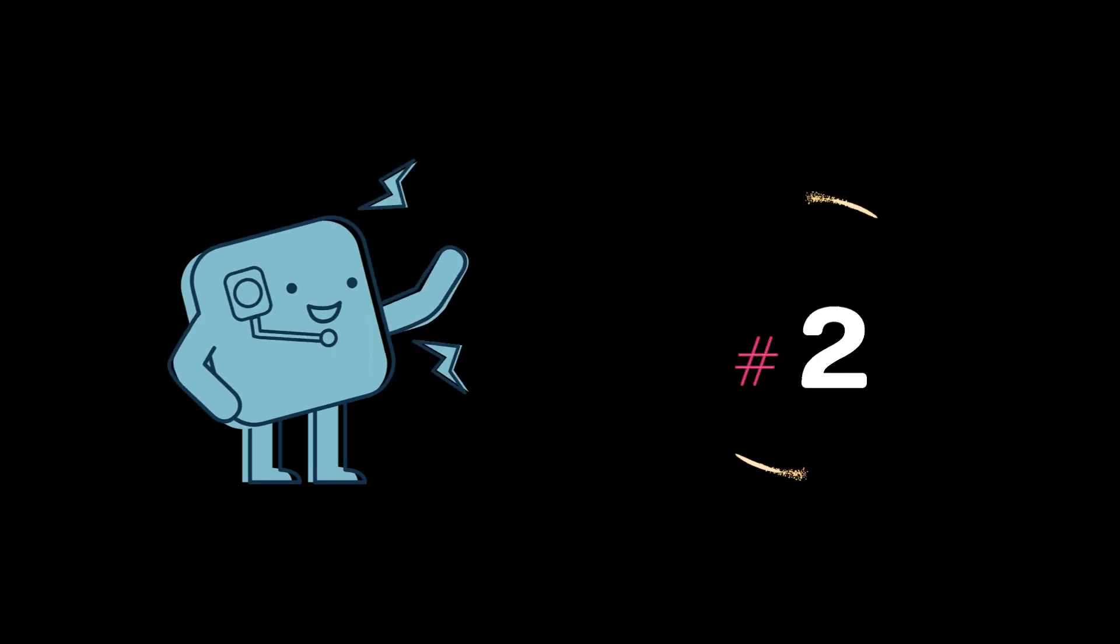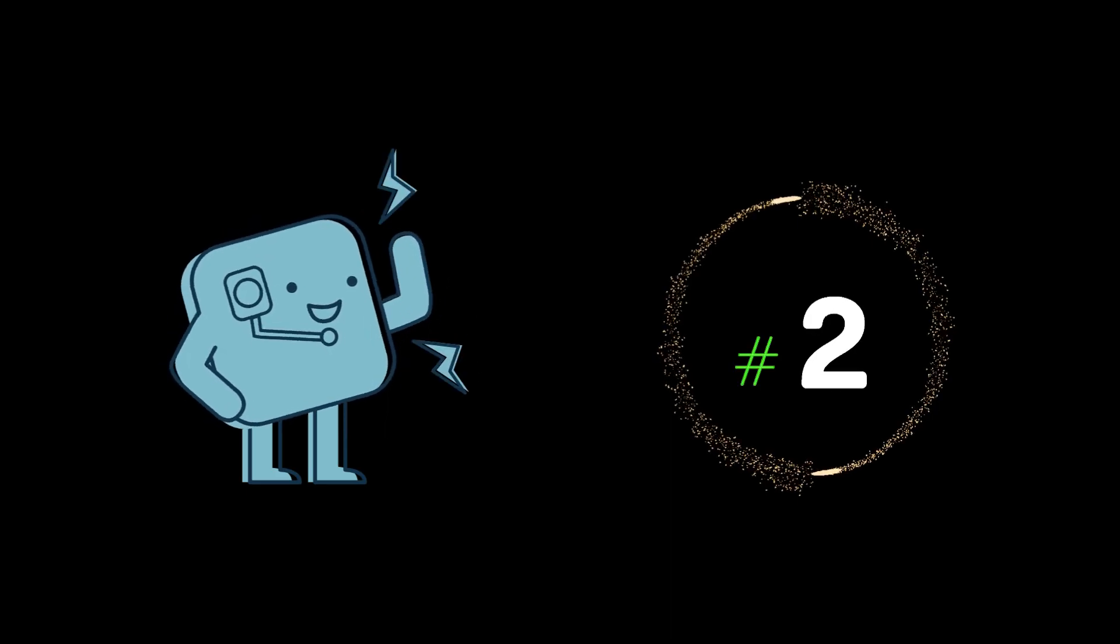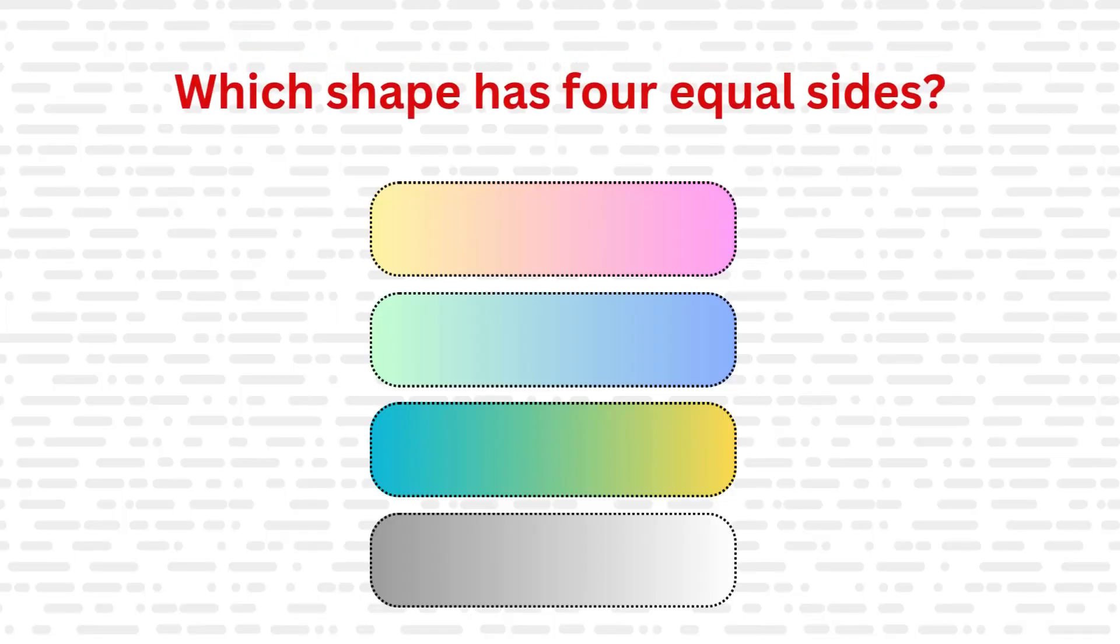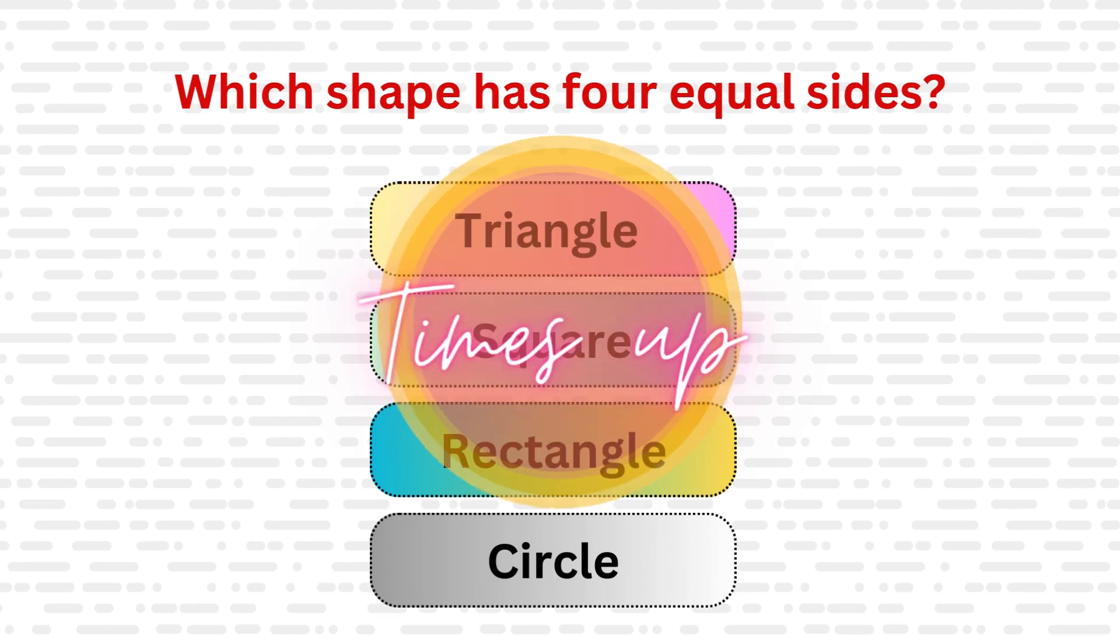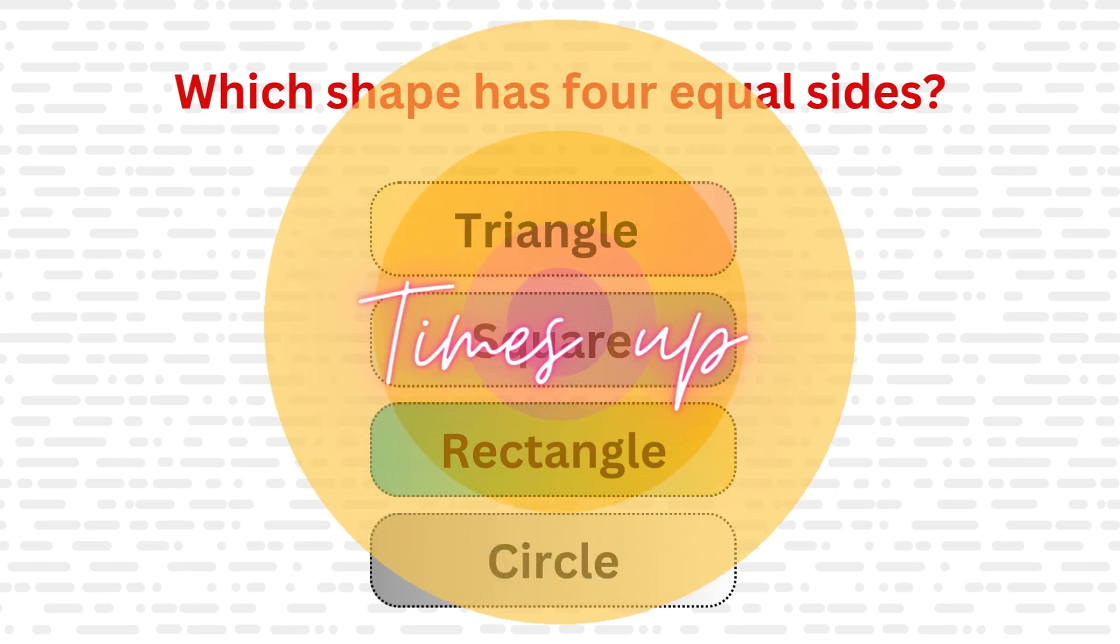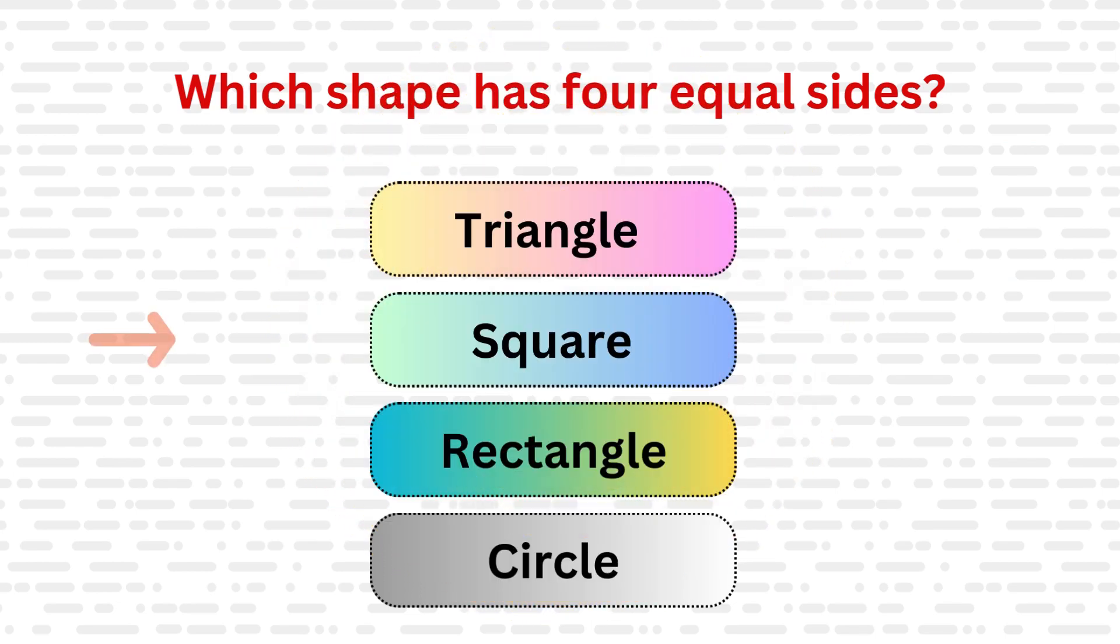Question number 2: Which shape has 4 equal sides? Triangle, Square, Rectangle, or Circle? Your time starts now. Time's up. Let's see the answer: Square.